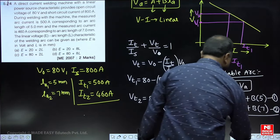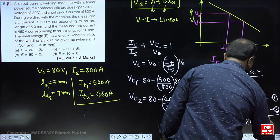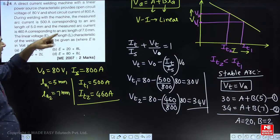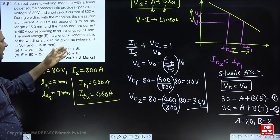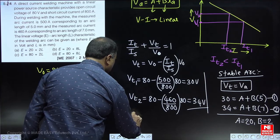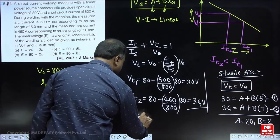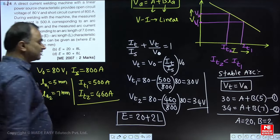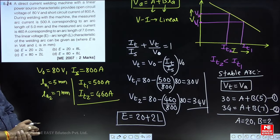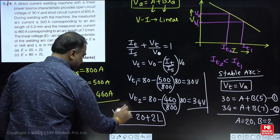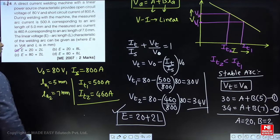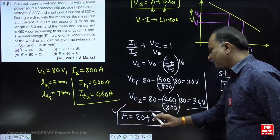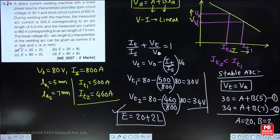Substituting A = 20 and B = 2, the arc voltage–arc length characteristic is: V_A = 20 + 2·L_A, or in the notation given in the problem, E = 20 + 2L (with arc length L in mm). This is the answer — option A: E = 20 + 2L.